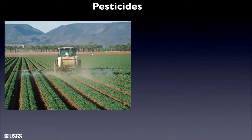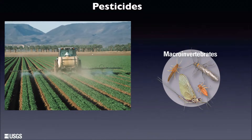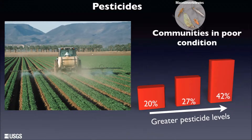Bringing pesticide data together with biological data, we find that macroinvertebrate communities are highly associated with pesticide levels. Specifically, the occurrence of communities in poor condition increased over 40% as pesticide levels increased, across different land uses and the country as a whole. The most potentially toxic pesticides were insecticides, which are designed to kill insects — and macroinvertebrate communities in streams are dominated by aquatic versions of insects.